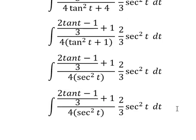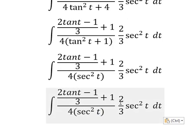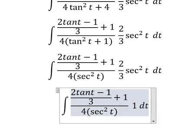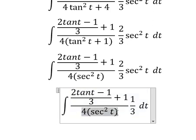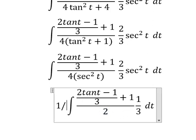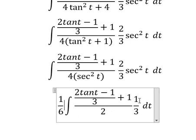And now we need to simplify: two times sec²(t). So two and three, we have six. So I will put one over six here.